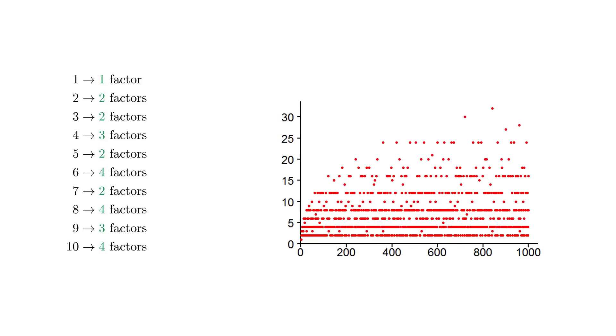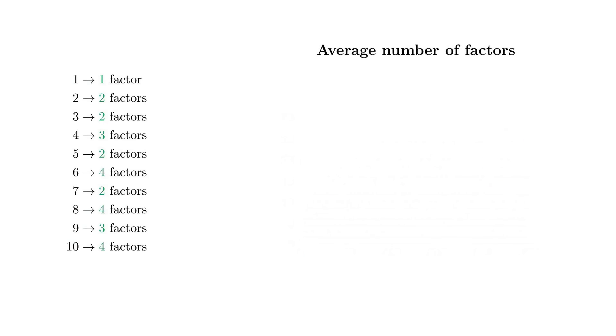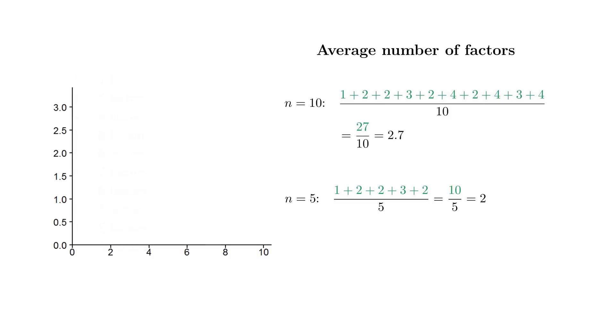So let's address our main question of how many divisors a number has on average. As a start, say we want to find the average number of factors the numbers from 1 to 10 have. Well, we get the average by computing the sum of the number of factors and dividing it by 10, equaling 27 over 10 or 2.7. Hence, a random number from 1 to 10 has an expected number of factors of 2.7. Doing the same for the first 5 numbers, we end up with 10 over 5 or 2. Again, as we want to understand how these averages grow, let's visualize them.